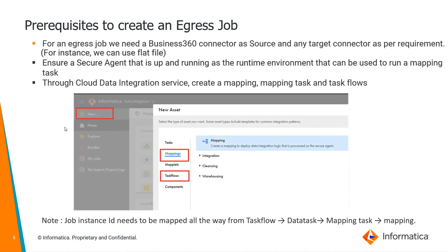Now let's discuss the prerequisites to create an egress job. For an egress job, we need a Business 360 connector as the source and any target connector as per requirement — for instance, a flat file. The next prerequisite is to ensure a secure agent is up and running as the runtime environment, used as part of the mapping task through the Cloud Data Integration service, where we create a mapping, mapping task, and task flows.